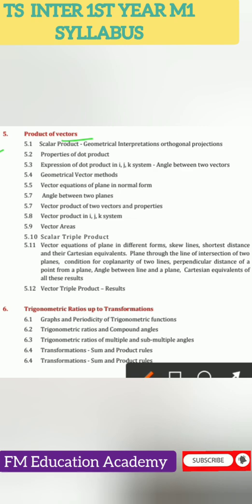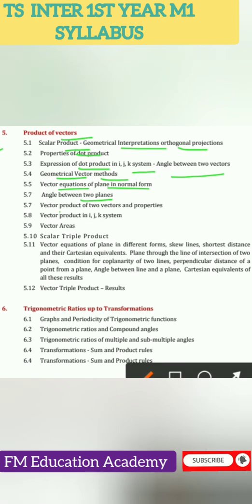Chapter 5 is product of vectors: scalar product, geometrical interpretations, orthogonal projections, properties of dot product, expression of dot product in the i, j, k system, angle between two vectors, geometrical vector methods, vector equation of a plane in normal form, angle between two planes, vector product of two vectors and properties, and vector product in the i, j, k system.